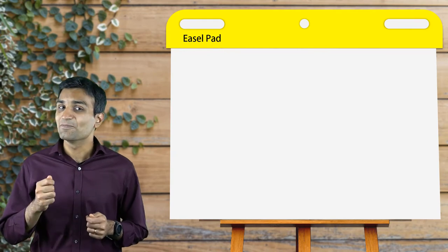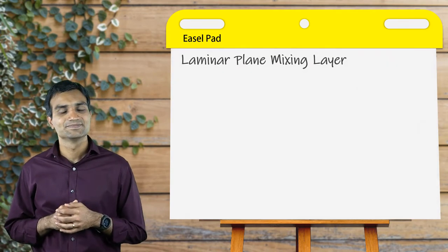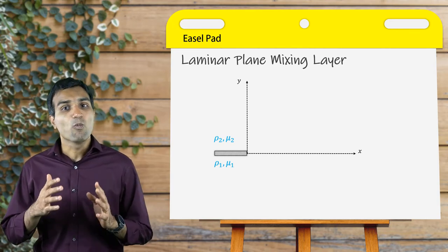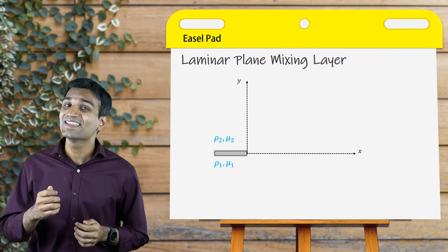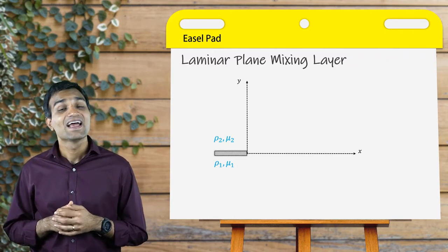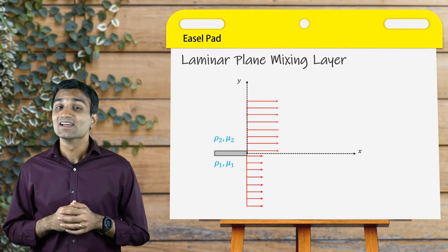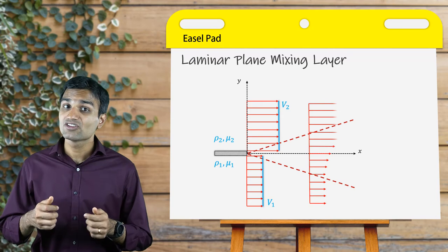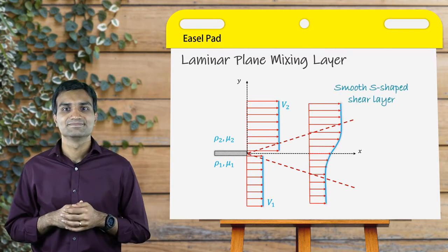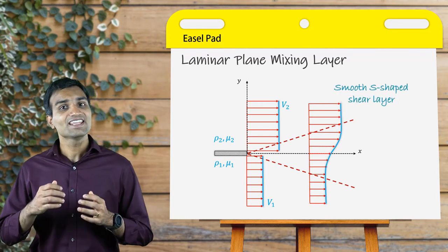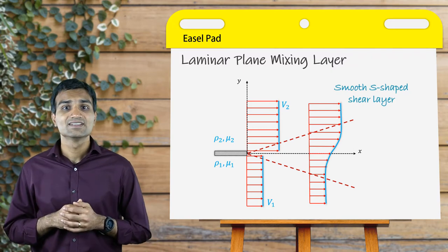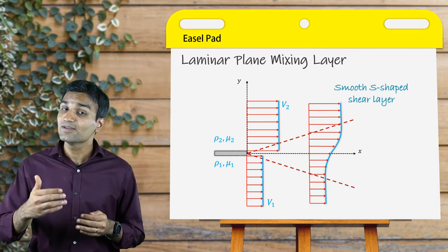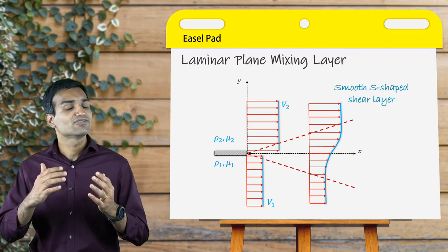Let us analyze a planar mixing layer first. Consider two fluid flows with properties given by subscripts 1 and 2 are separated by a thin flat plate. As the mixing layer expands, the fluid viscosity smooths the velocity profile leading to the formation of an S-shaped shear layer. Here, the velocity in the region of the shear layer is varying smoothly and outside this layer, the velocity asymptotes out to their respective freestream velocities.